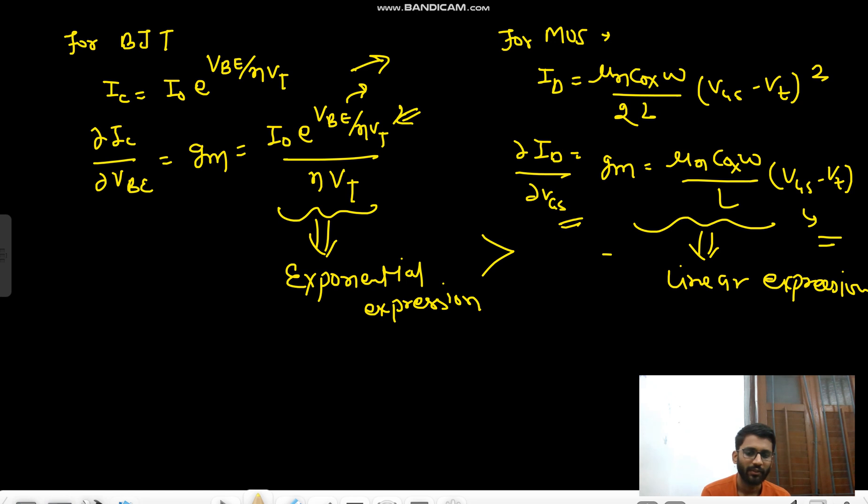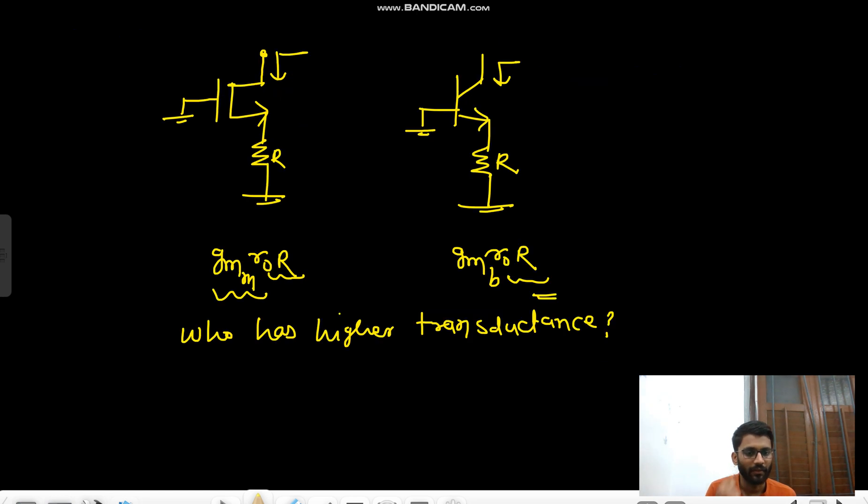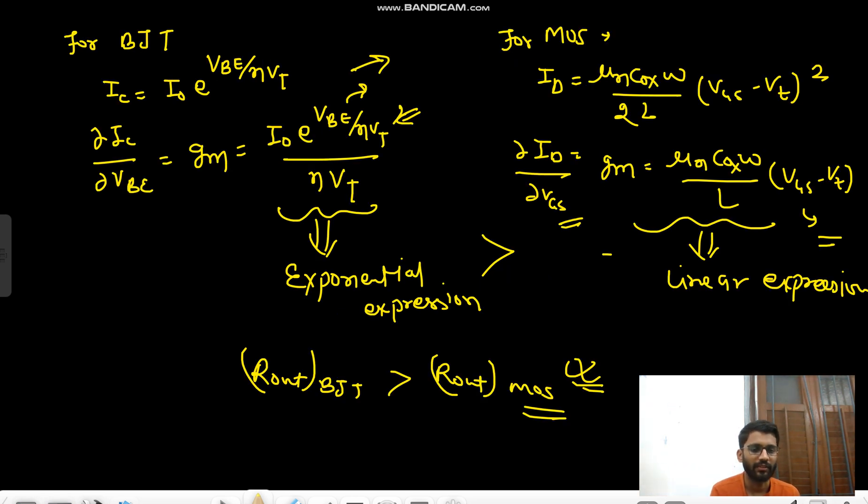So R_output of BJT will be higher than R_output of MOSFET, okay? So that's the final answer. So this will be higher, okay. So that was one important concept of transconductance. Okay, thank you.